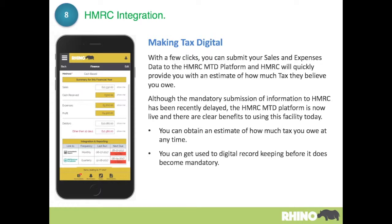Rhino is also linked to HMRC's Making Tax Digital platform. With a few clicks you can submit your sales and expenses information, and HMRC will look at all the other information they've got and provide you with an estimate of how much tax you owe. Although the HMRC Making Tax Digital implementation has been delayed, it's something that will happen and it's good to get on board with a compatible product. Their platform is now live and you can submit figures at any point — very convenient if you're thinking of making a capital purchase, for example.